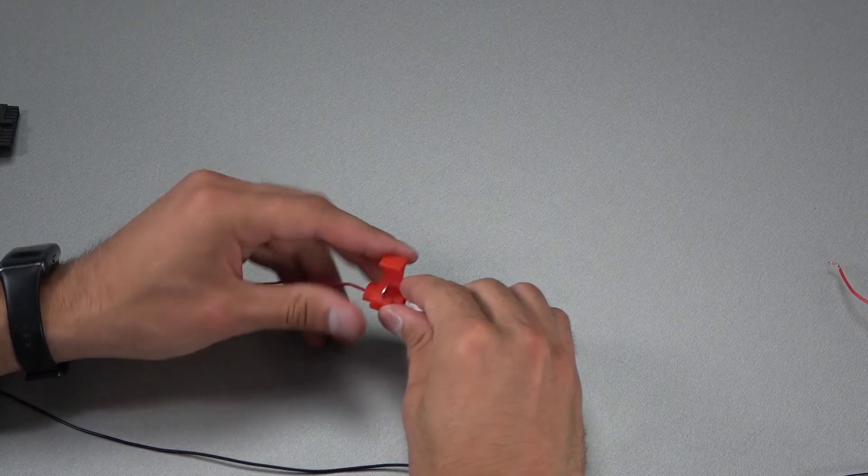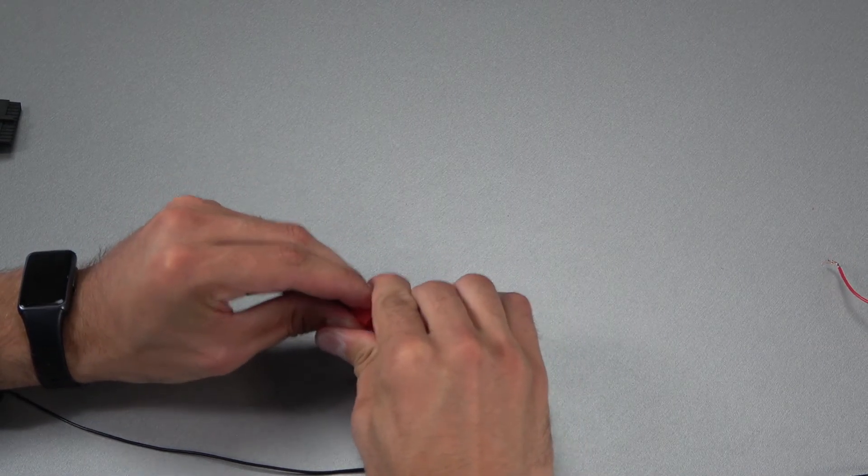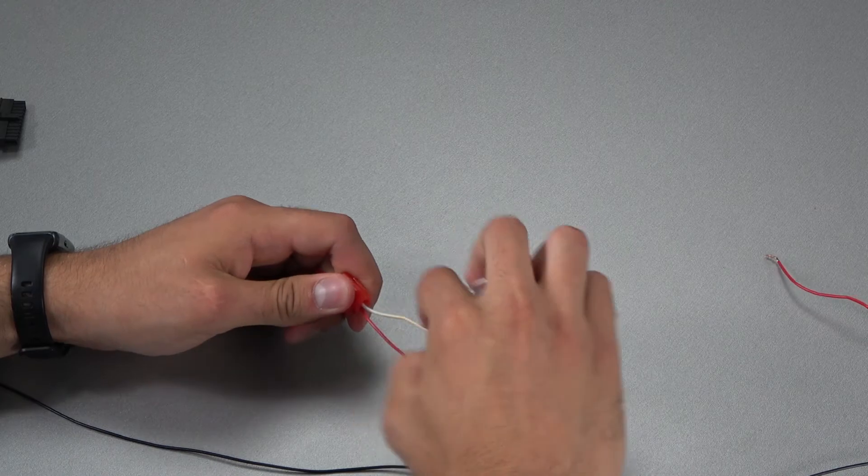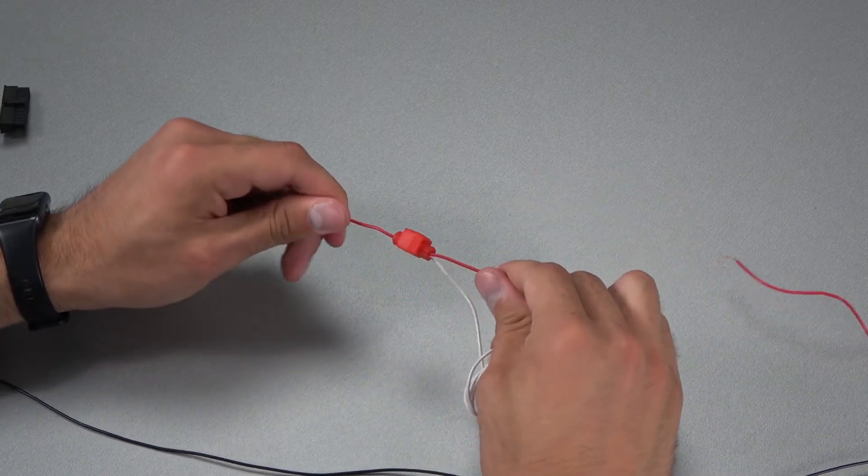From one side, we insert the wire to which you want to connect. From the other, the wire to be connected. Now, you need to press the blade and the connection is ready.